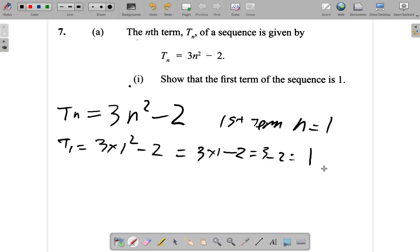So we see that T₁ is equal to 1, and since they say 'show that this is so,' then you write 'shown' and underline it.